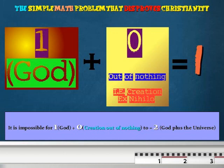This simple math problem proves creation ex nihilo is impossible, since one (God) plus zero (God creating out of nothing) cannot equal two, which would be God in addition to the universe he created ex nihilo.